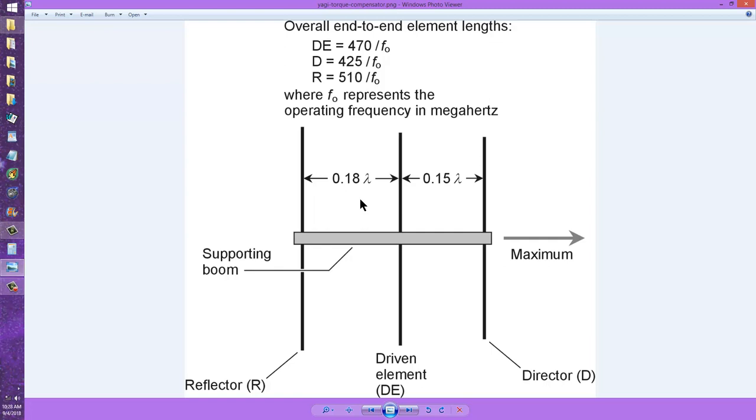Ideally, the supporting mast that holds up the antenna, this is a top view, the supporting mast should be located along the boom at such a point that it's at the center of gravity of the antenna so that there is no lateral pressure at this joint.